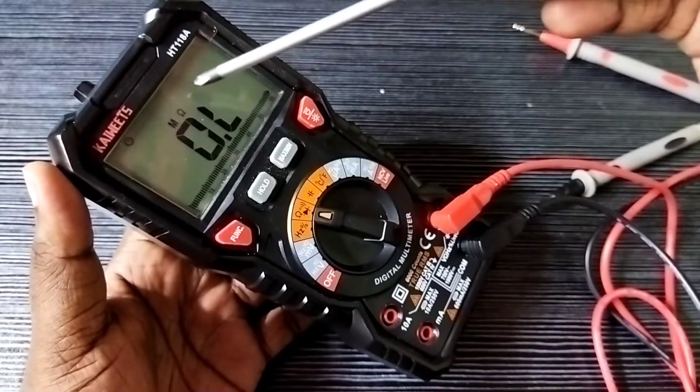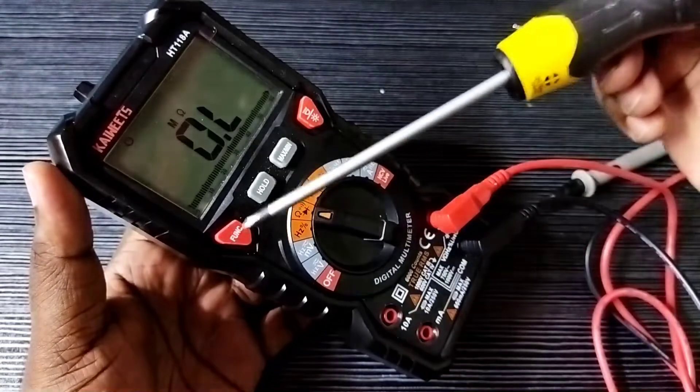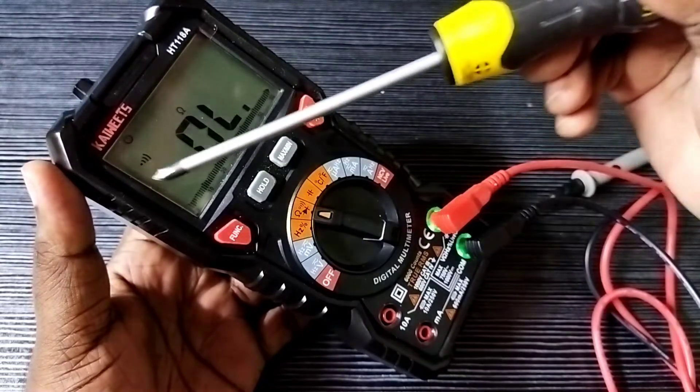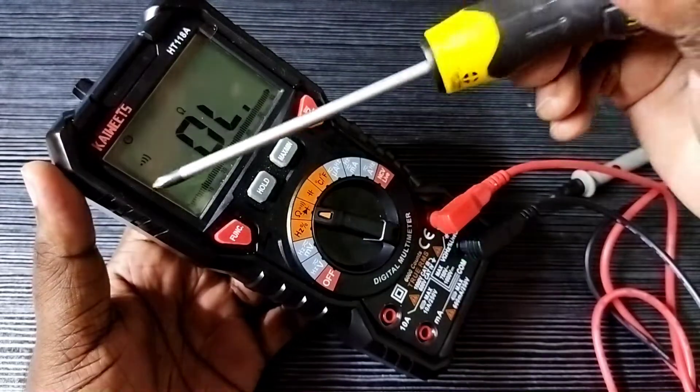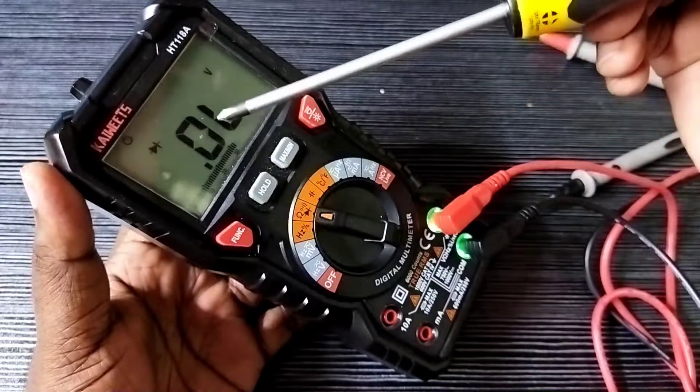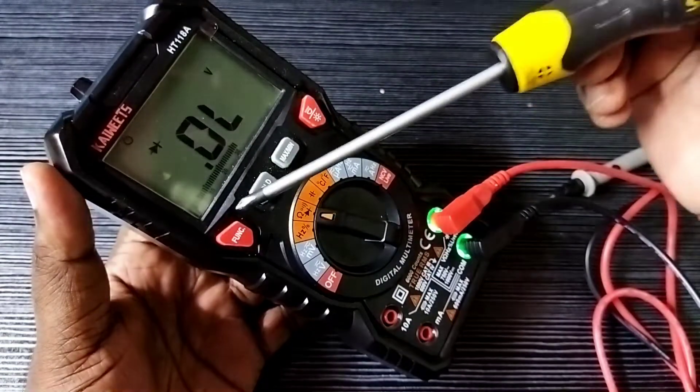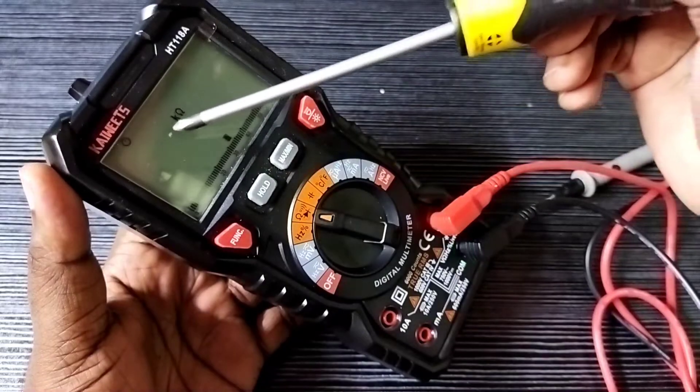So here we can see it showing ohm, so we need to change it. Press this function button and change to continuity. See, now it's ready to measure the continuity. If you press the function button again, you can see now we can measure the diode. This is ohm.